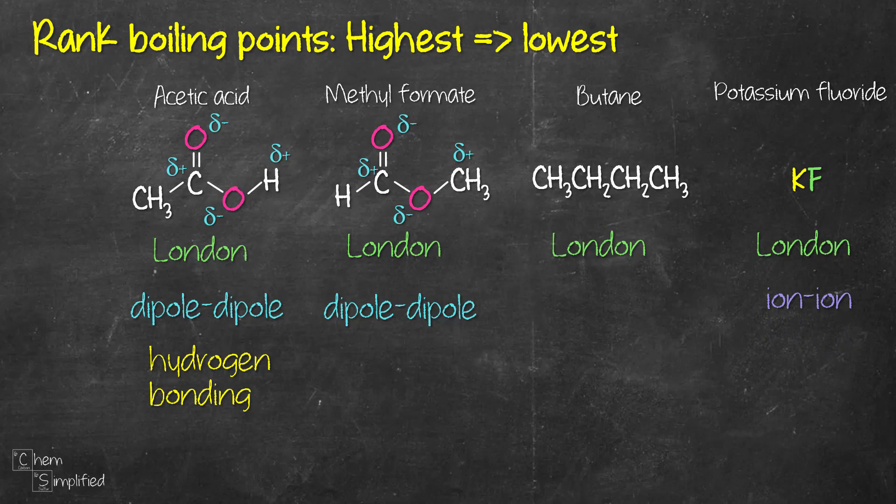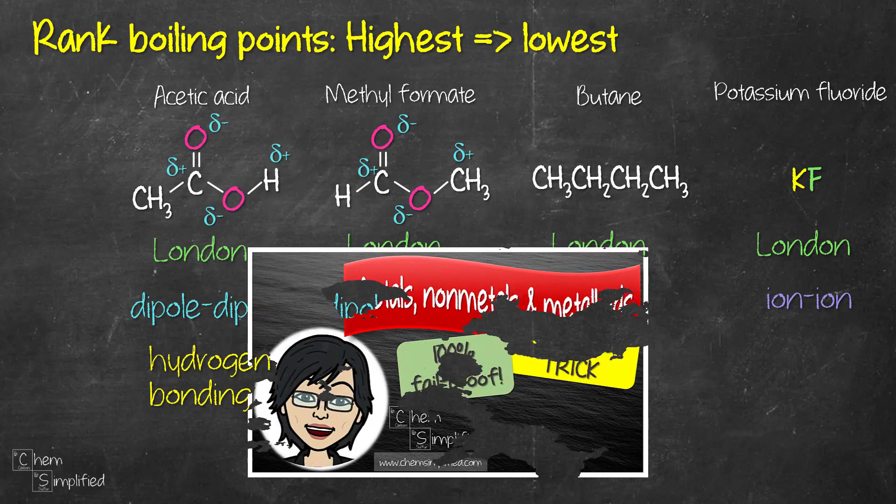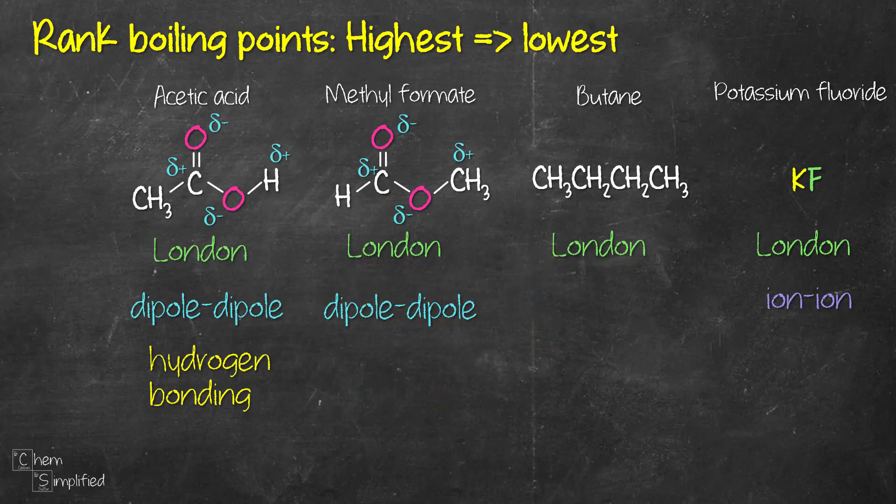Now just in case you're wondering, how did I know KF is an ionic compound? Well, it's because K is a metal and F is a non-metal. If you need help classifying the elements, I'll link a video on top. And normally, but not always, metals and non-metals come together to form ionic bonds, which is present in an ionic compound.